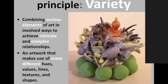Artists apply variety to the elements — for example, using different types of lines: straight lines going in different directions, some thicker and some thinner. However, if you use too much variety it can mess with your unity and harmony, so keep an eye on that. You don't want to go too extreme with variety — you still want things to look good together.